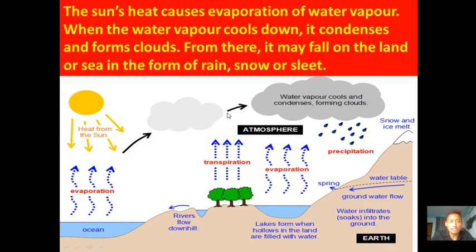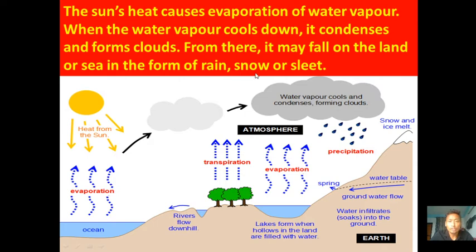Clouds form when condensation takes place — inside the cloud we have many water vapors and moisture. After condensation, when these water droplets become very heavy, they fall down on the land, sea, trees, and oceans in the form of rain, snow, or sleet. This is how the Sun's heat drives the water vapor cycle and how rainfall occurs.